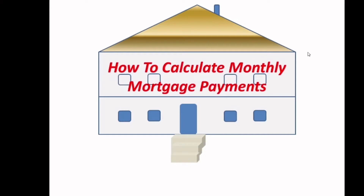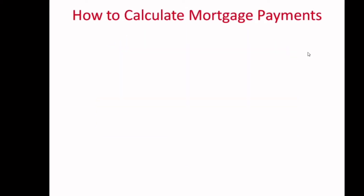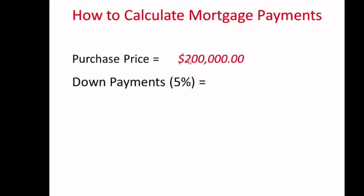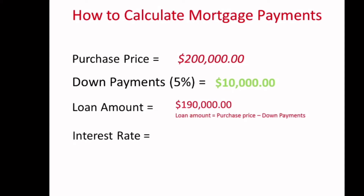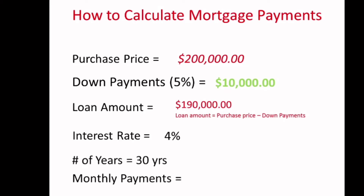Let's dive in on how to calculate the mortgage payment. Let's say the purchase price is $200,000, you put down 5% which comes out to $10,000, and the loan amount will be $200,000 minus $10,000 which is $190,000. The interest rate — let's start with a whole percent. Right now the interest rate is lower, so we'll use 4% on a 30-year mortgage.